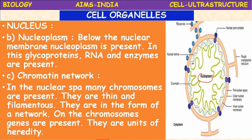The chromatin network is the green-colored part surrounding the nucleoplasm. It is called the chromatin material or chromatin network. In the nucleus, many chromosomes are present; they are thin and filamentous, in the form of a network. On the chromosomes, genes are present, and these genes are called the units of heredity.